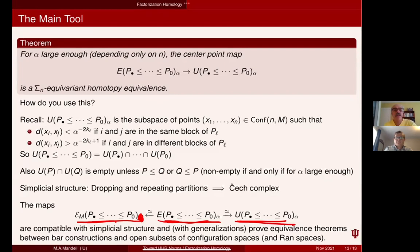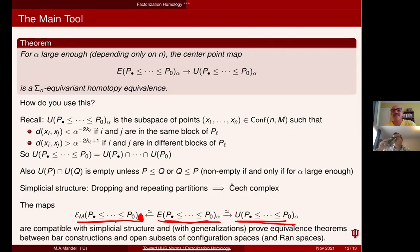Question: Seeing a bar construction and refinements of partitions, I'd start thinking about all the work Michael Ching and Greg Arone have done — and they've gotten close to mentioning factorization homology in some of their papers. Is this related to anything they've done?